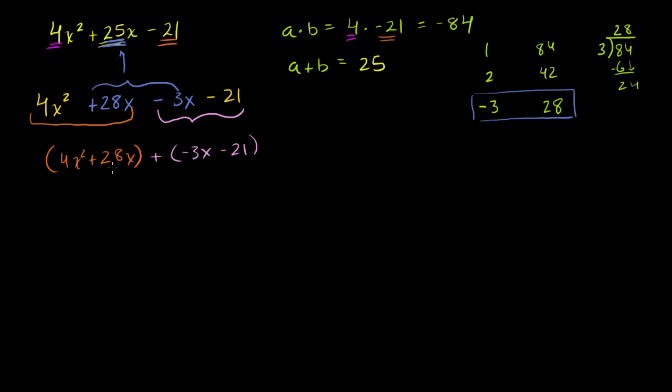And now, in each of these groups, we factor as much out as we can. So both of these terms are divisible by 4x. So this orange term is equal to 4x times x, 4x squared divided by 4x is just x, plus 28x divided by 4x is just 7. Now, the second term, remember, you factor out everything that you can factor out. Well, both of these terms are divisible by 3, or negative 3. So let's factor out a negative 3, and this becomes x plus 7.